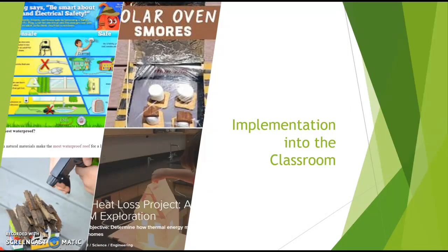For implementation into the classroom, we had a discussion in class and I also gathered ideas from the internet that could work from elementary level up through middle school and high school. We talked about electrical safety as a good one for primary students — looking at how wires should not be exposed within electrical cords. We also discussed the solar oven experiment, looking at different materials that would help get the sunlight and hold enough heat to melt marshmallow and chocolate together to create a s'more without building a fire.